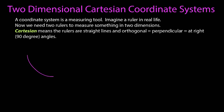Now, if I want to quantify that motion, I'm going to need two rulers to measure where it was. Something along the left and right axis and the other up and down. When I say Cartesian, what that means is that the rulers are straight lines and orthogonal, which means they're perpendicular, which means they're at right angles, which means 90-degree angles.